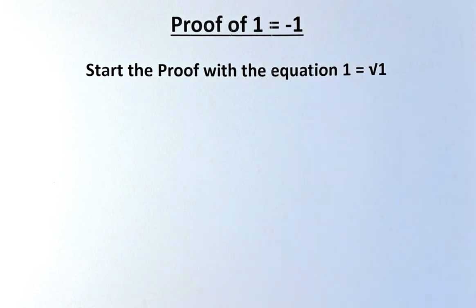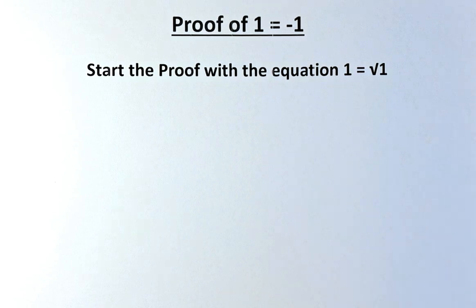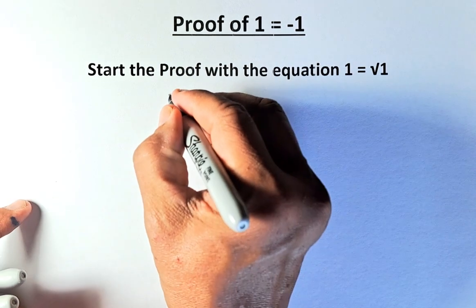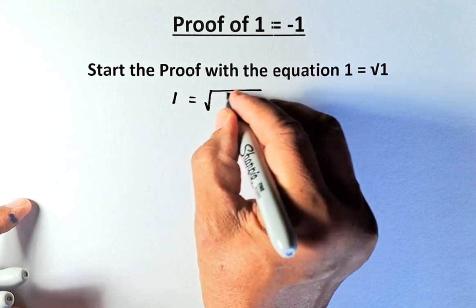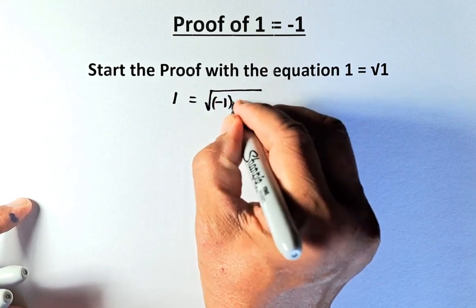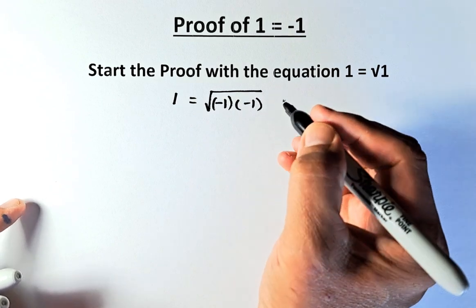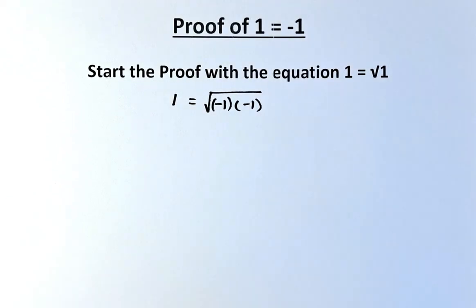So 1 is equal to square root of 1 is fine. And then we are going to work most of the proving on the right-hand side of the equation. So we're going to start with 1 equals the square root of negative 1 multiplied by negative 1. We can convert negative 1 times negative 1 to be equal to 1.